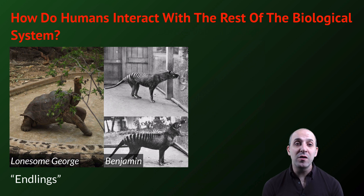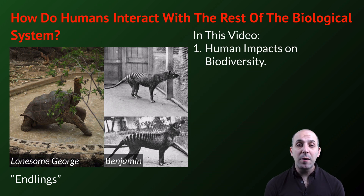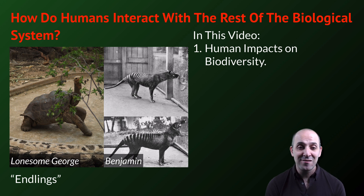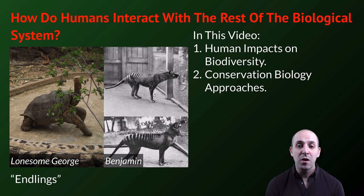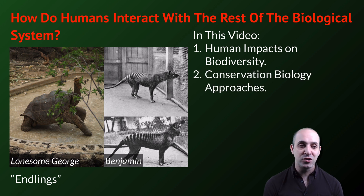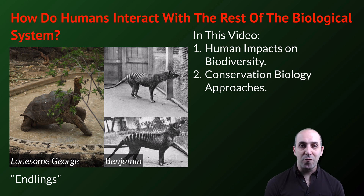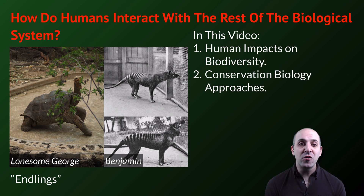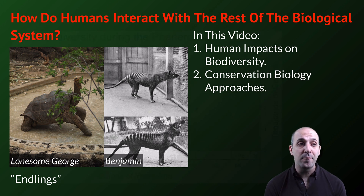And that's what we're going to be talking about in this video: how do humans interact with the rest of the biological system? We're going to first talk about human impacts on biodiversity and how the human population has the effects that it has on the rest of the biological system. Then we'll talk about approaches taken in conservation biology to try to prevent this from continuing and keep our ecosystems as functional as we can into the future.